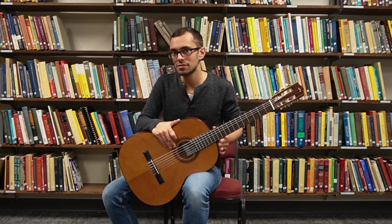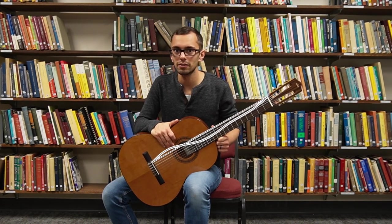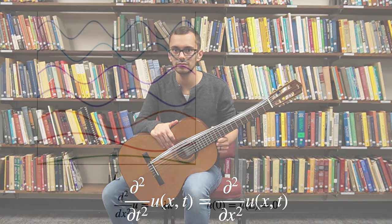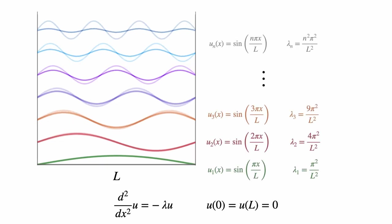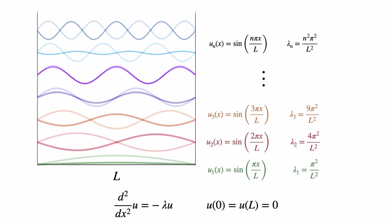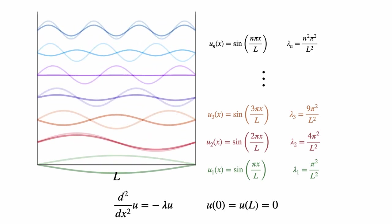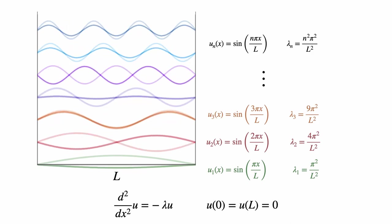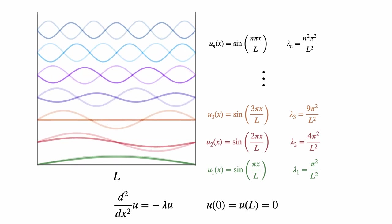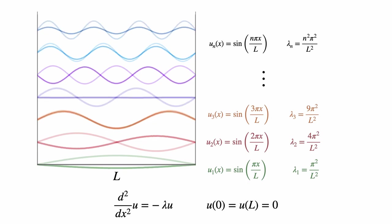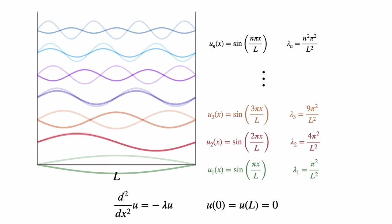Going back to our previous video, we saw that we could model the vibration of a guitar string according to the wave equation. The frequencies that we hear are the square roots of the eigenvalues of the Laplace operator. For a one-dimensional string, we can solve for the eigenfunctions and eigenvalues explicitly. Here, n is just a whole number — 1, 2, 3, 4, and so forth — and L is the length of the string. The frequencies we're hearing are πn/L for n an integer.